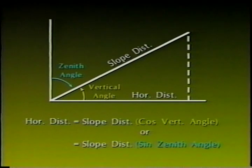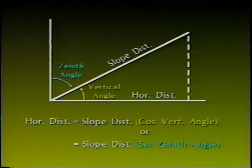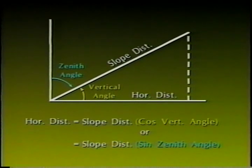After the angles have been adjusted, any slope distances must be reduced to horizontal distances. Normally, when the slope distance is measured, the zenith angle will be observed. Where vertical angles are observed, the horizontal distance equals the slope distance times the cosine of the vertical angle. Where the zenith angles are observed, the horizontal distance equals the slope distance times the sine of the zenith angle.